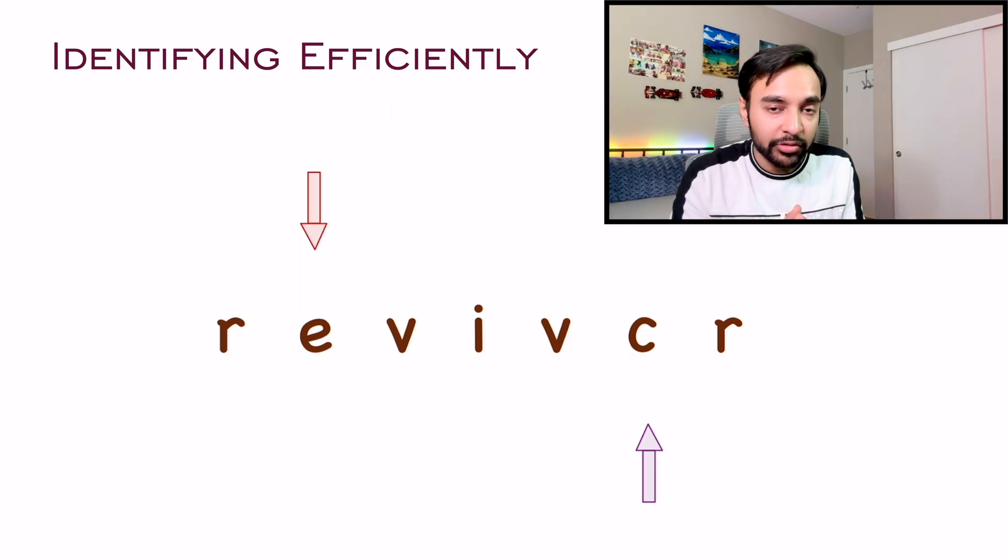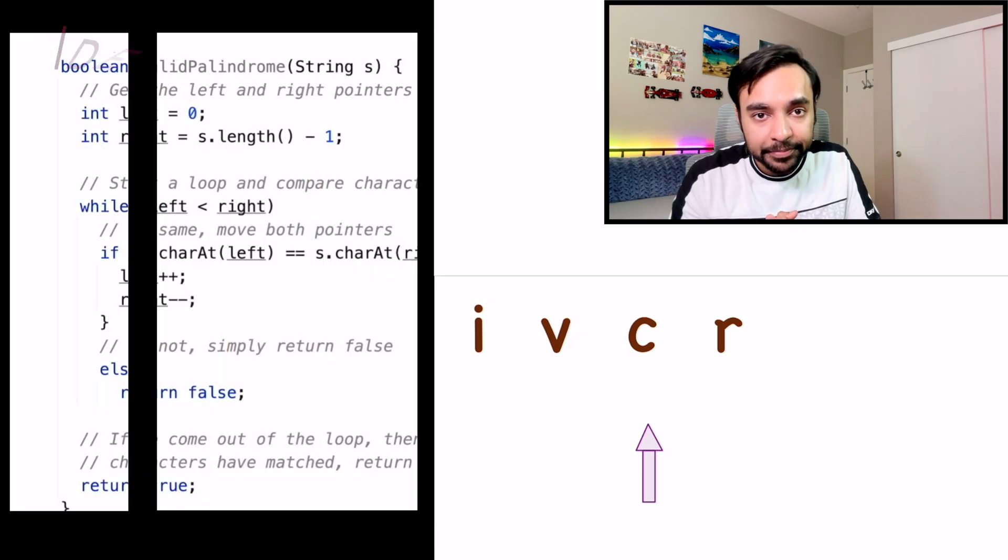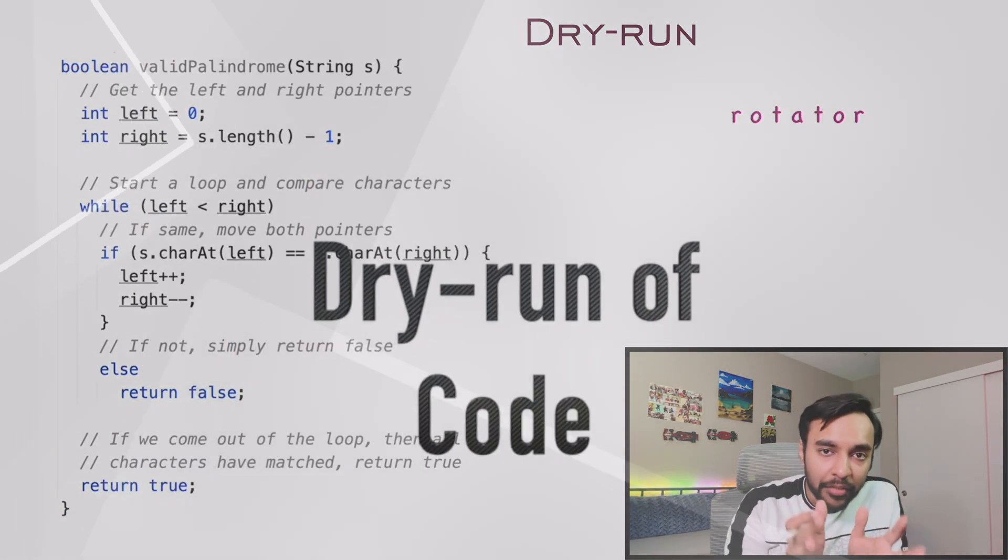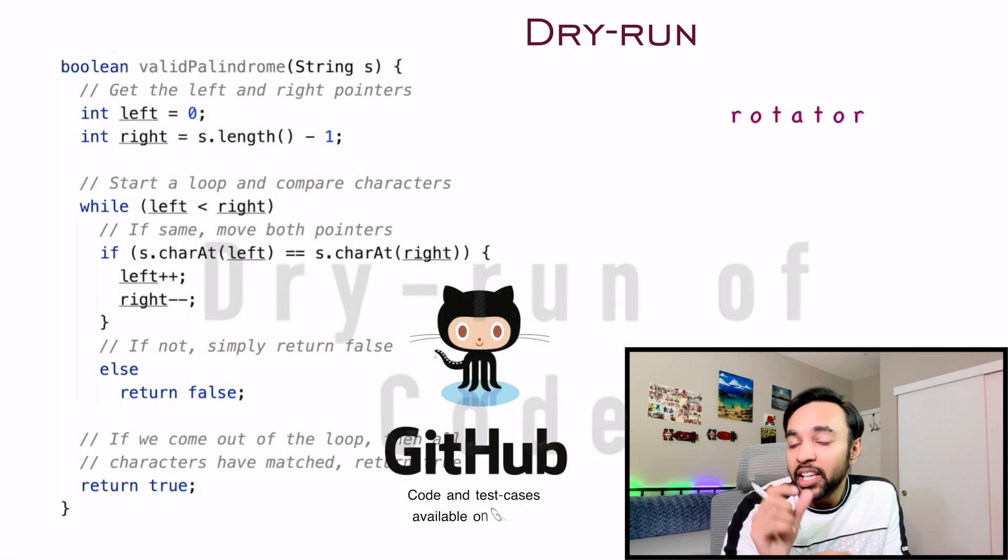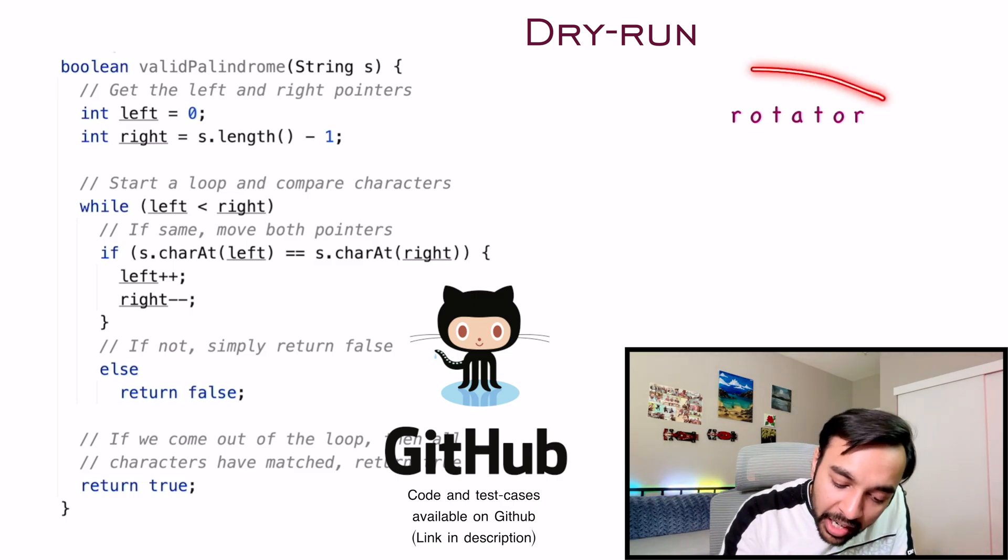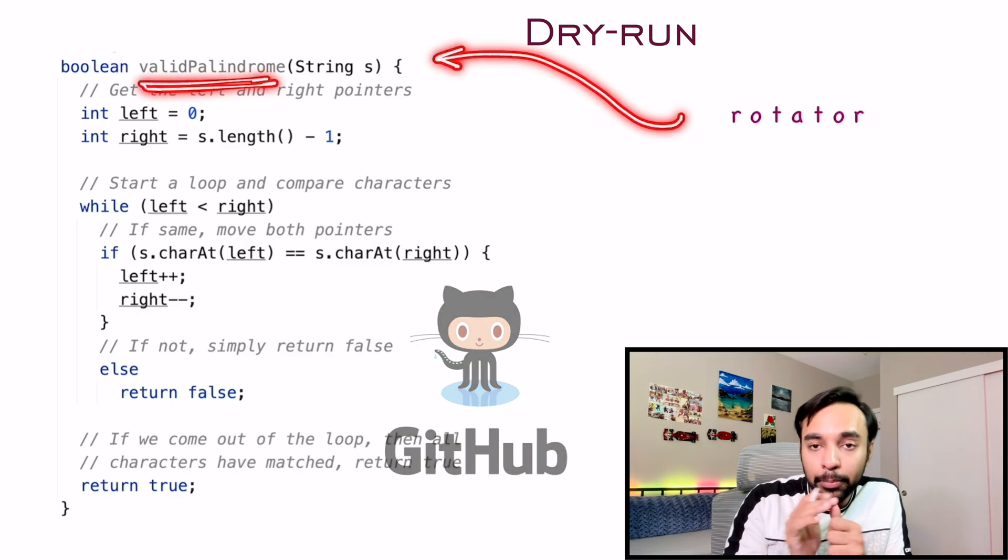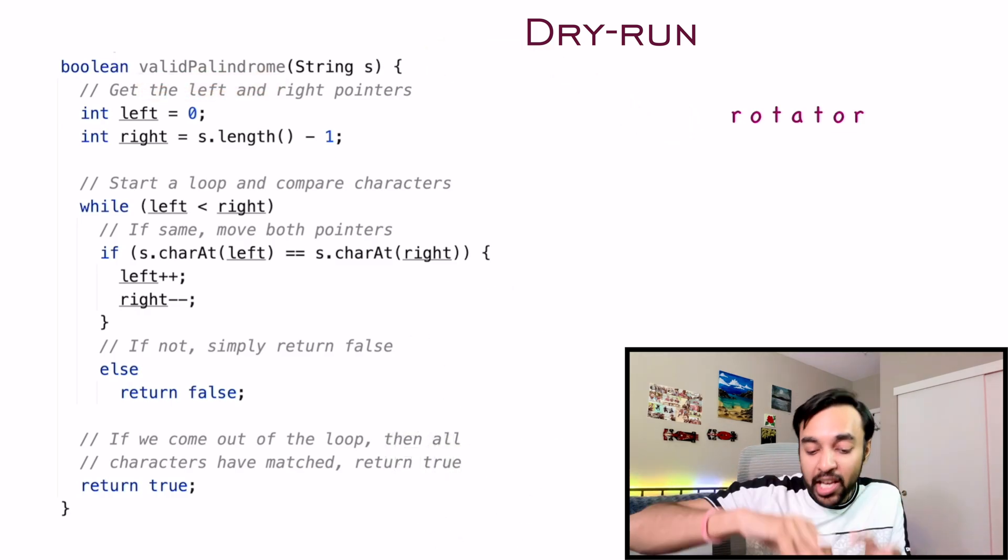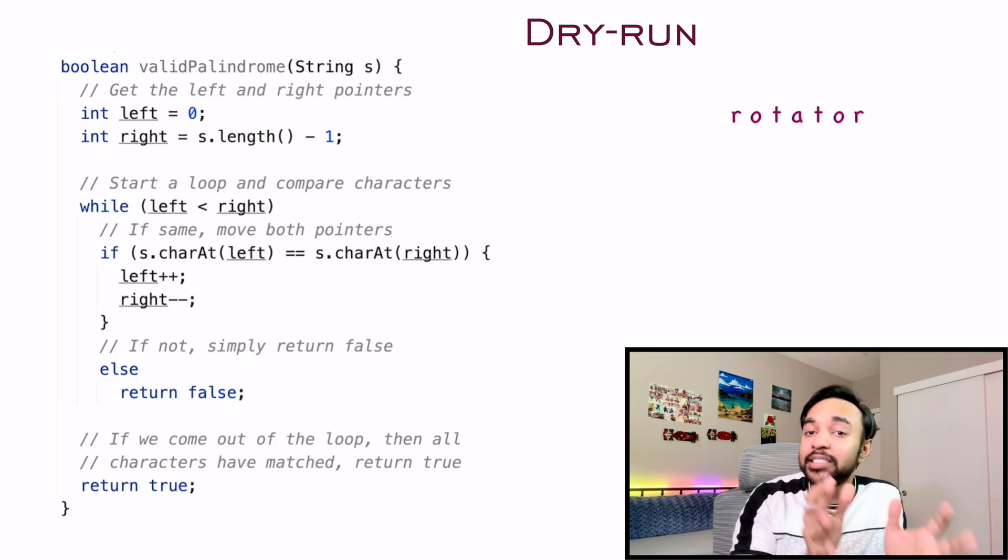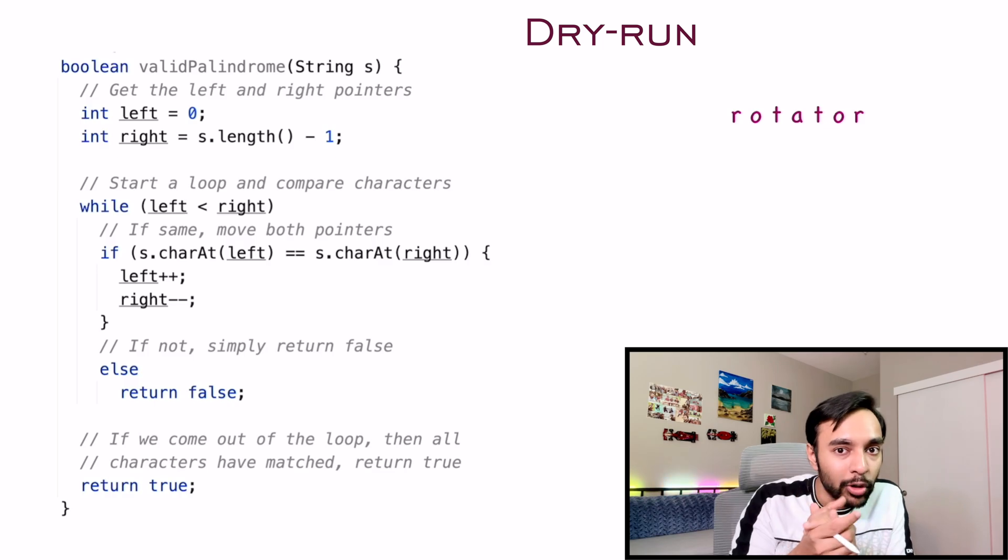Let us quickly do a dry run of the code and see how it is working in action. On the left side of your screen, you have the actual code that can identify if a given string is palindrome or not. And on the right, I have the sample string that is passed in as an input parameter to the function valid palindrome. So if this string will be a palindrome, this will return true. Otherwise, it is going to return false.